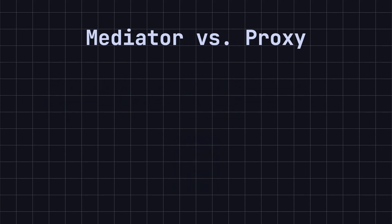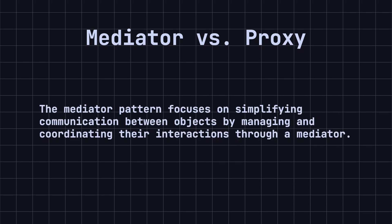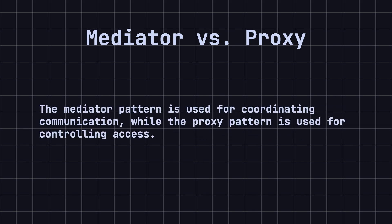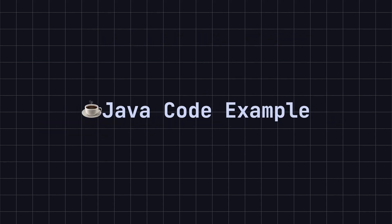The difference between the mediator pattern and the proxy pattern is that the mediator pattern focuses on simplifying communication between objects by managing and coordinating their interactions through a mediator. The proxy pattern, on the other hand, controls access to an object, often adding extra functionality like access control or lazy loading. In other words, the mediator pattern is used for coordinating communication, while the proxy pattern is used for controlling access.